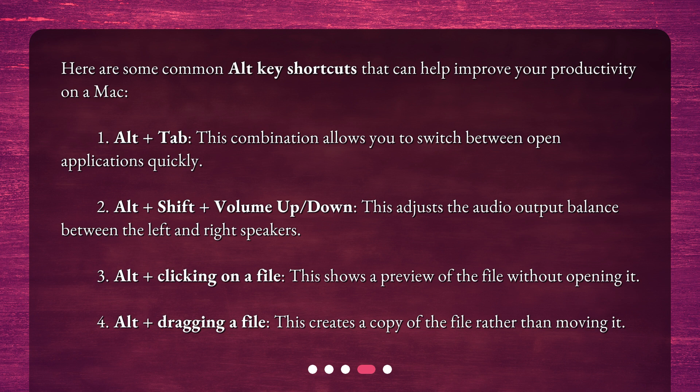Second, Alt + Shift + Volume Up or Down: this adjusts the audio output balance between the left and right speakers. Third, Alt + clicking on a file: this shows a preview of the file without opening it. Fourth, Alt + dragging a file: this creates a copy of the file rather than moving it.